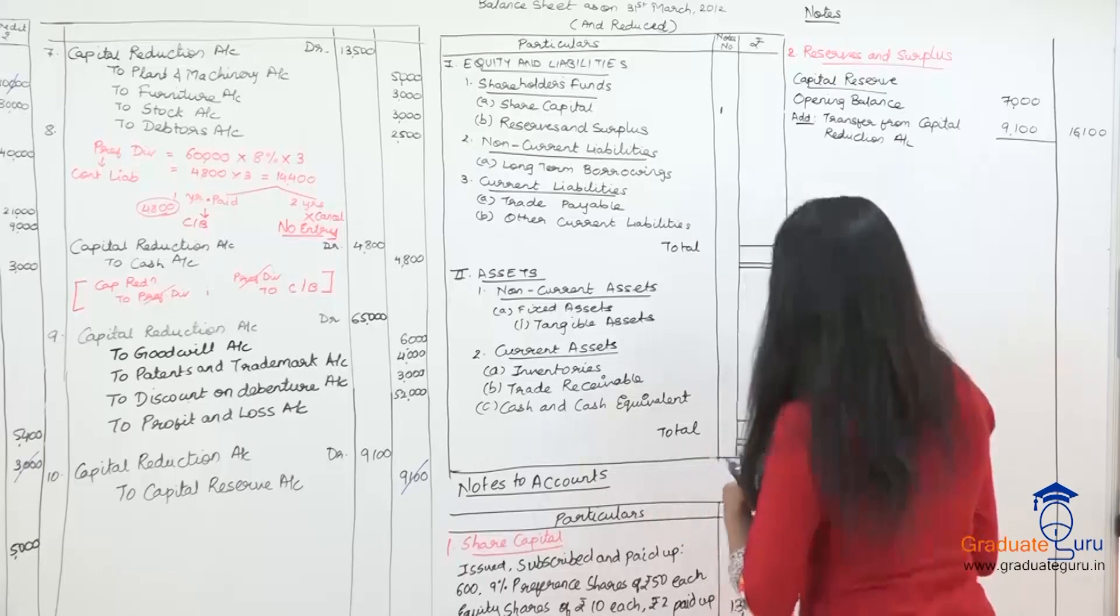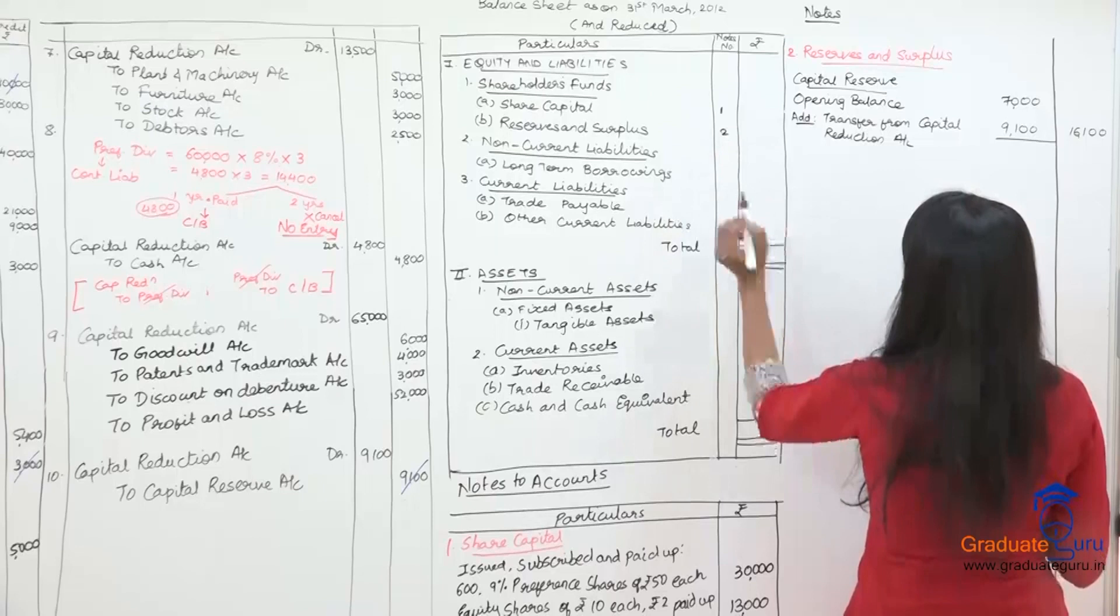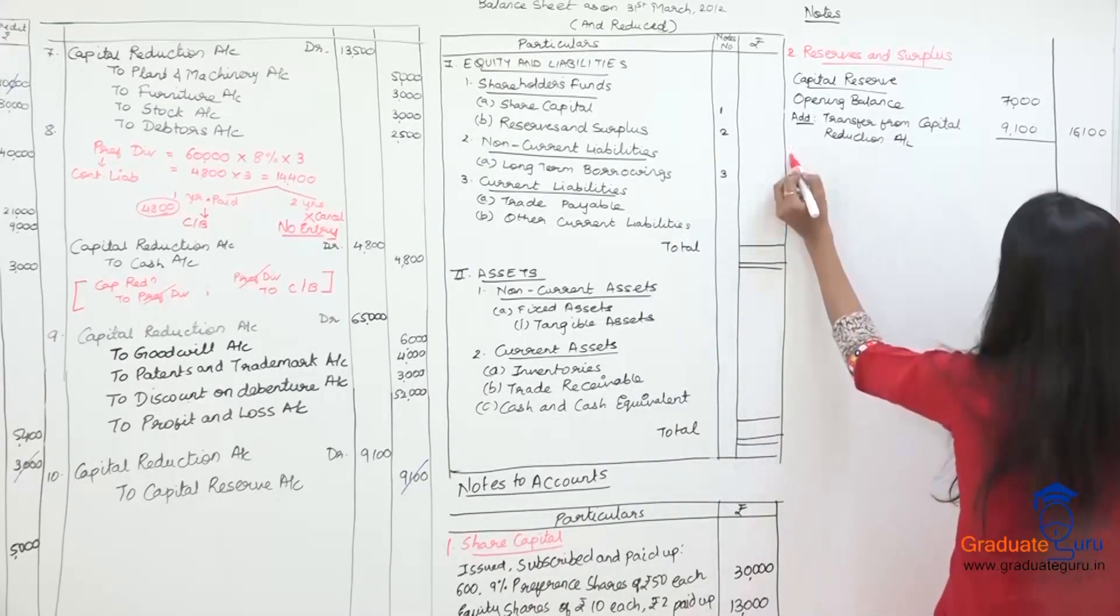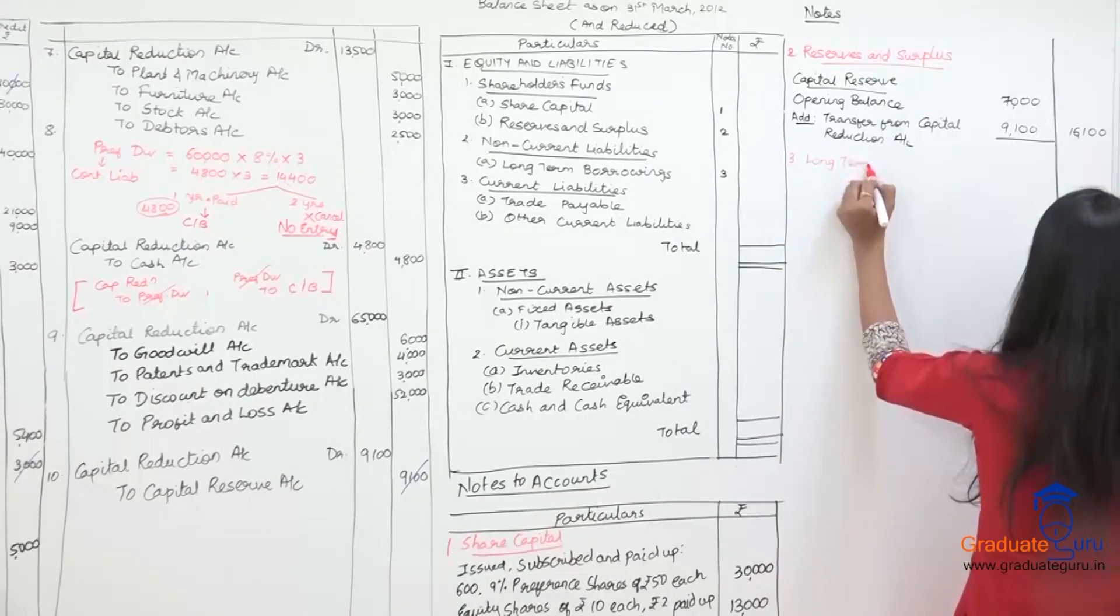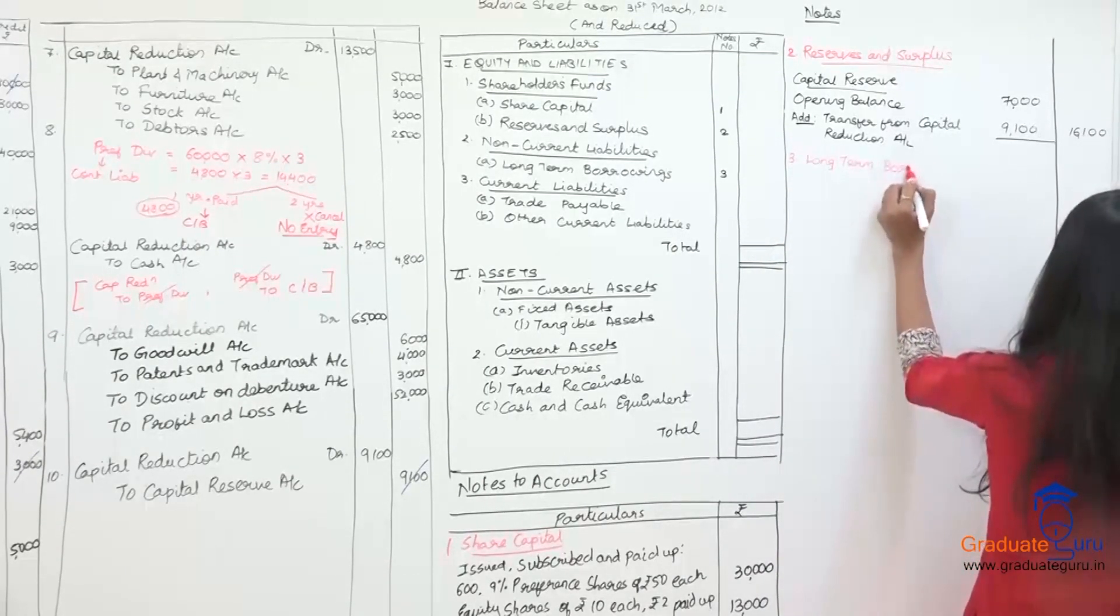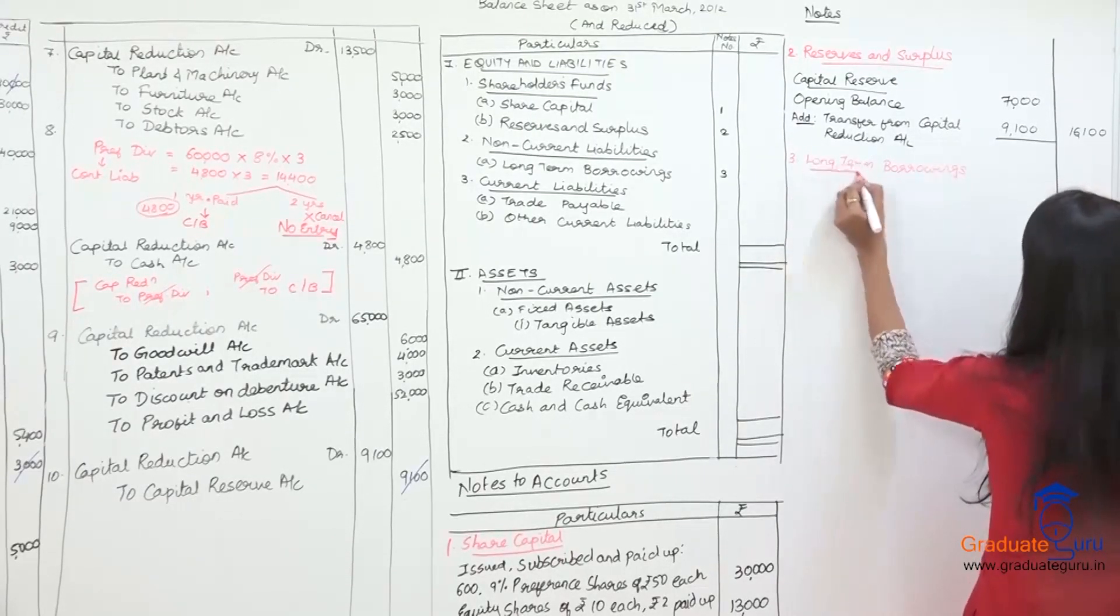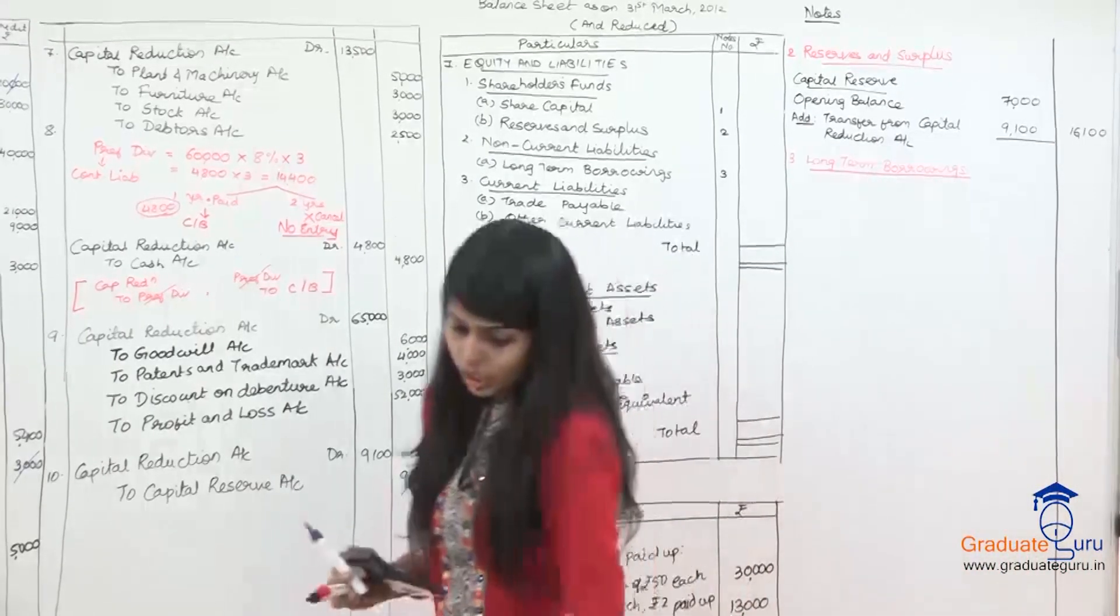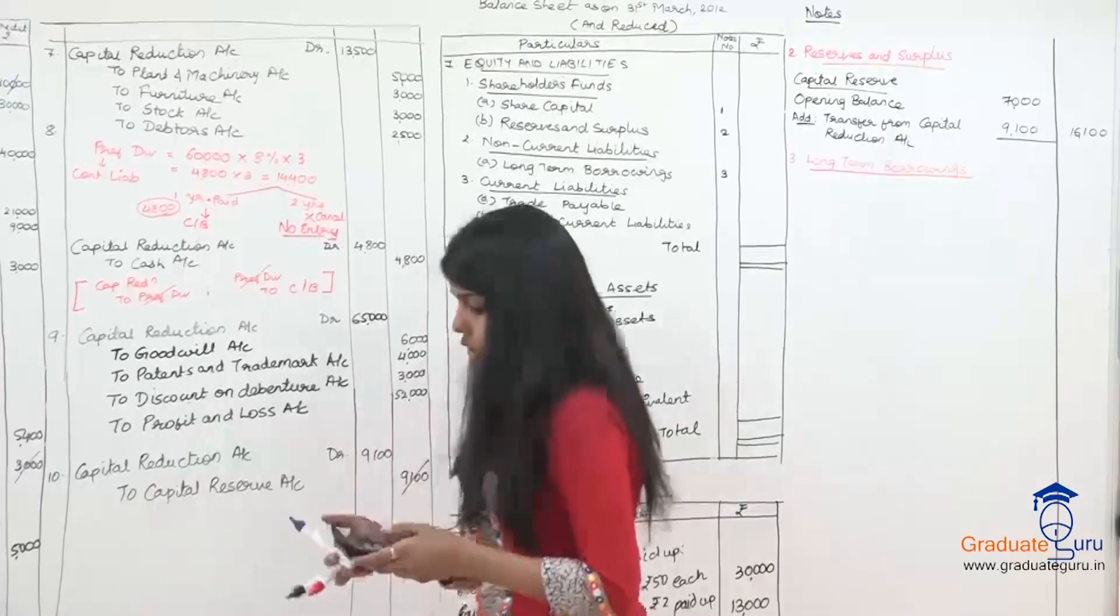Fifth, next is your long term borrowings. So note not two. Reserves and surplus was not two. Not three. Long term borrowings. Long term borrowings. Yeh long term borrowings yeh kya hai? Question mein aapke paas five percent debentures diya hua hai. Thirty thousand ka. So take on your calci. Thirty thousand.